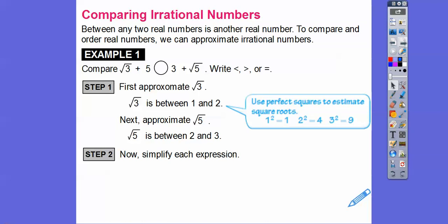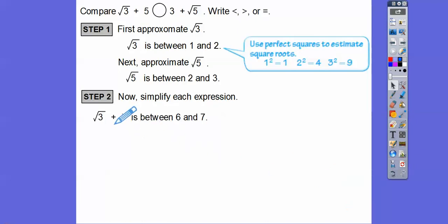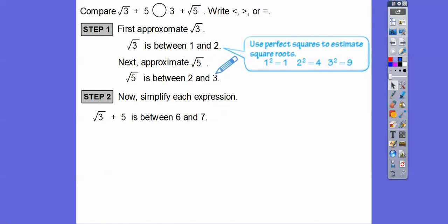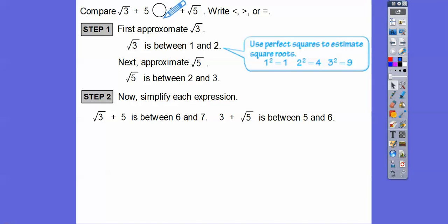Let's simplify each expression. Since root 3 is between 1 and 2, and we're adding 5, so 5 plus those boundaries gives us between 6 and 7. On the other side, 3 plus root 5 — since root 5 is between 2 and 3, we add 3 to get between 5 and 6. So which is bigger — the one between 6 and 7, or the one between 5 and 6? Obviously the one between 6 and 7, so root 3 + 5 is greater than 3 + root 5.